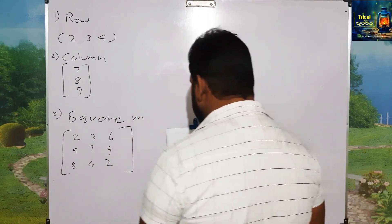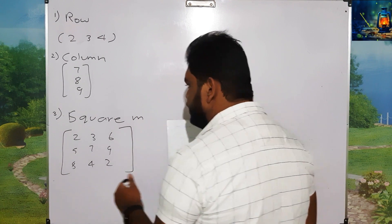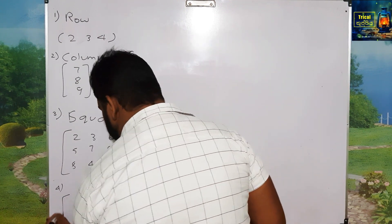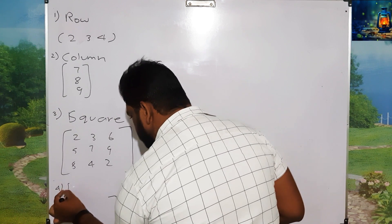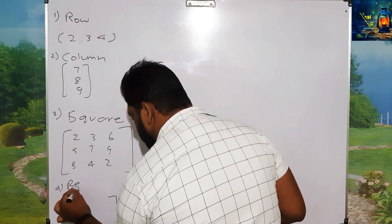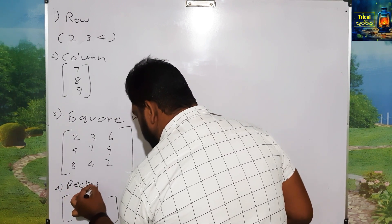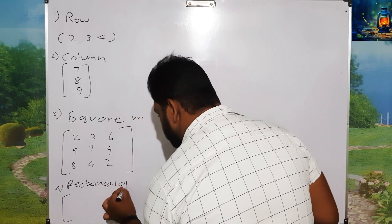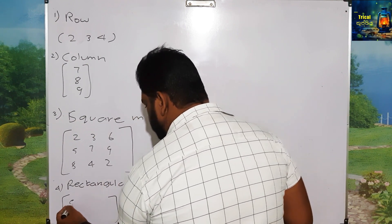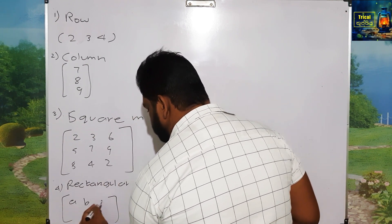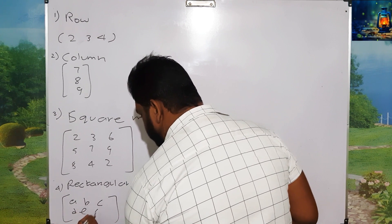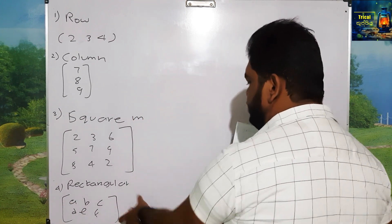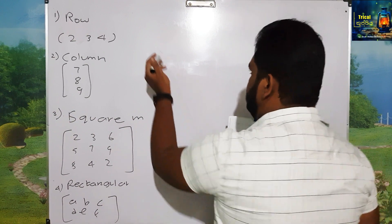This is the rectangular matrix. This is a rectangular matrix A, B, C, D, E, F. This is a rectangular matrix.